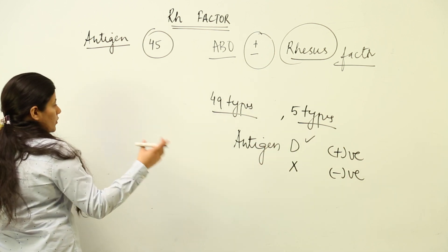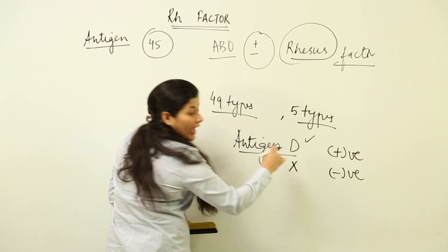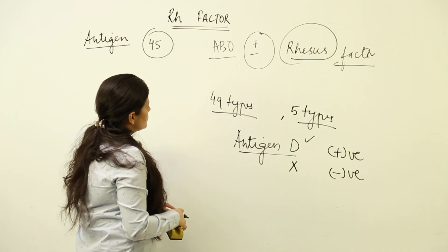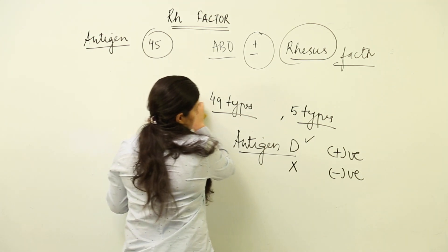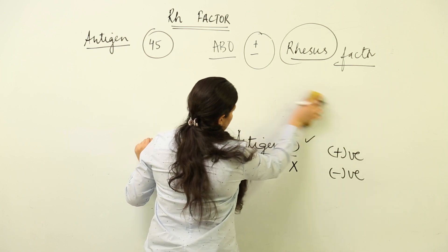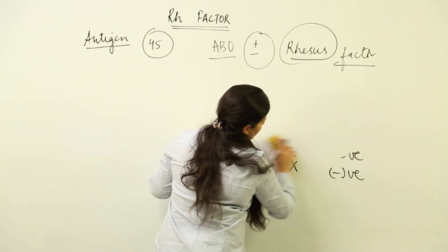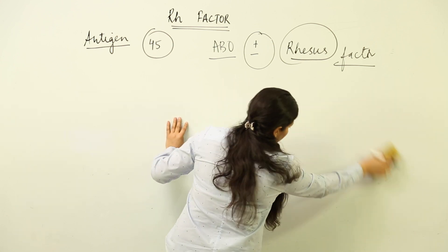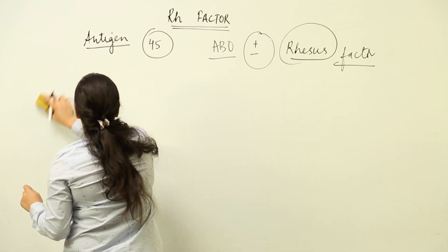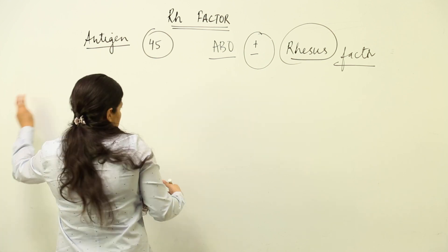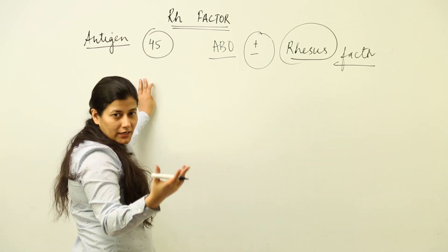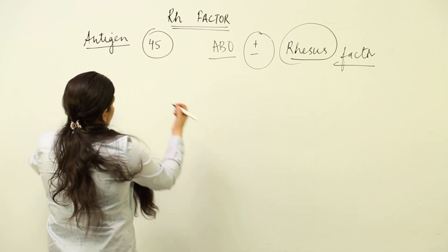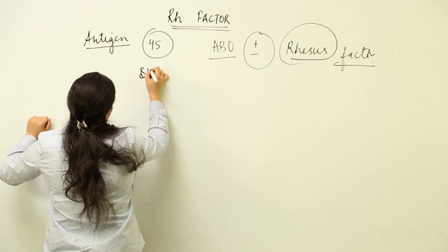That is why you often say if somebody has O positive blood group, that means they have Antigen D — and those who have O blood group do not have any antigen. So you can understand the basic concept behind blood grouping. Now, because our topic deals with the Rh factor, we are going to talk about Antigen D — positive and minus — and we understand the importance of Rh factor from the topic of blood transfusion.